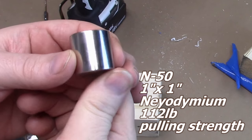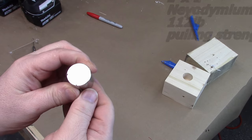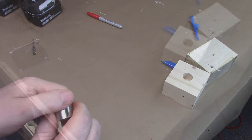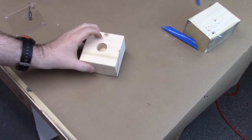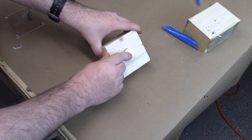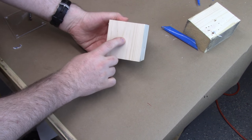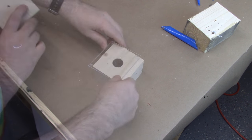So this would be an N50 neodymium magnet, one inch by one inch, got about 112 pounds of pulling strength. So it's a pretty strong little magnet there. And on the bottom I put a little access hole in case I need to pop it out later.